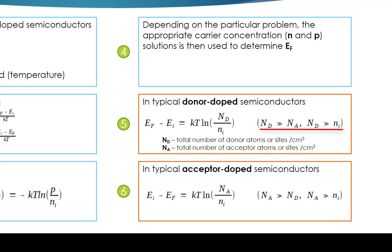In typical donor doped semiconductors, Nd is far greater than Na, Nd is also far greater than Ni. Thus, we get EF minus EI equals KT times ln(Nd over Ni). Nd is the total number of donor atoms per cubic centimeter. Na is the total number of acceptor atoms per cubic centimeter.